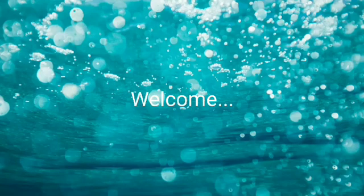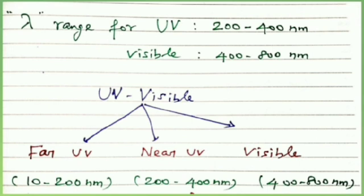In this video we will briefly discuss ultraviolet and visible spectroscopy, otherwise called electronic spectroscopy. It is very useful to measure the number of conjugated double bonds and also aromatic conjugation within various molecules. The lambda range for UV is 200 to 400 nanometers, or 2000 to 4000 angstroms, and for the visible region, 400 to 800 nanometers.